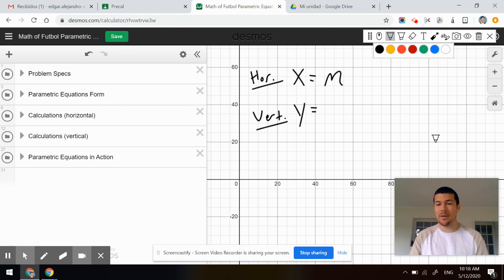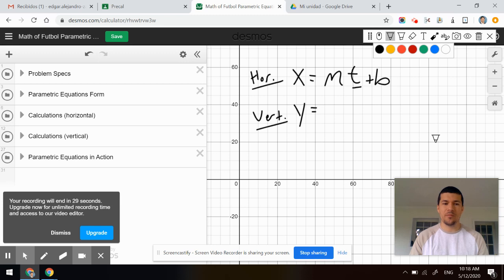We're not going to say X and we're not going to say MX plus B. Let's say MT plus B because the function is going to depend on the parameter T.